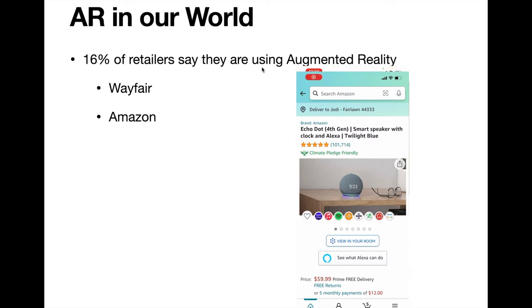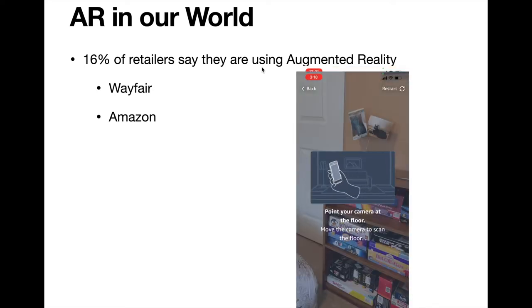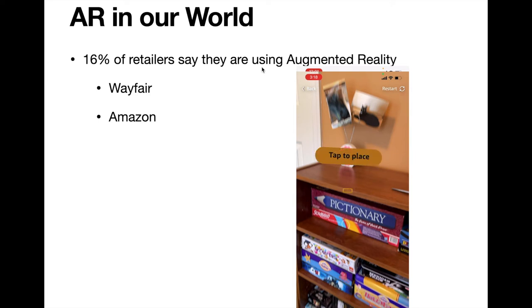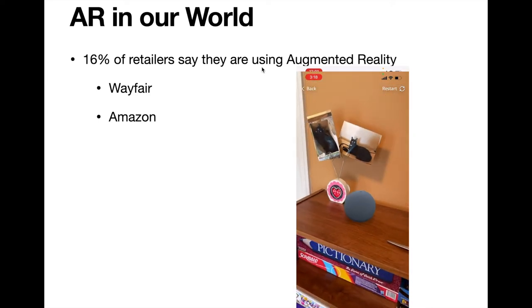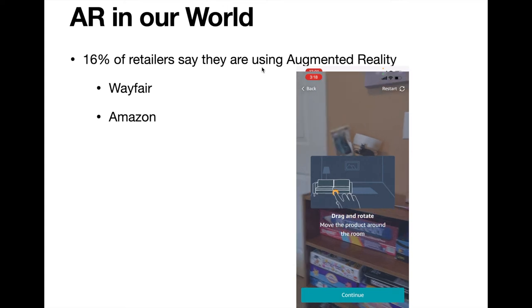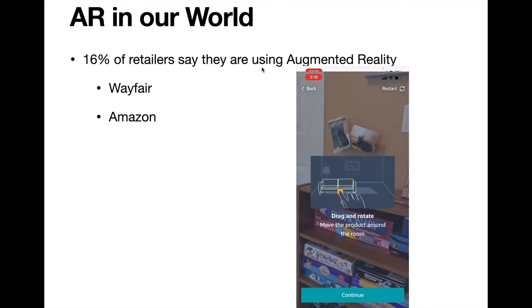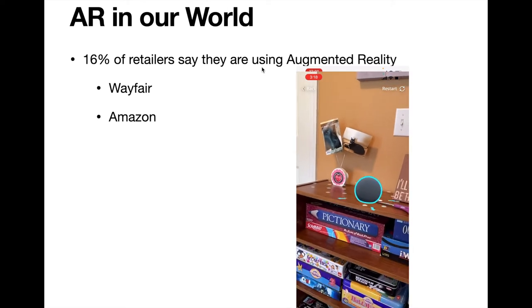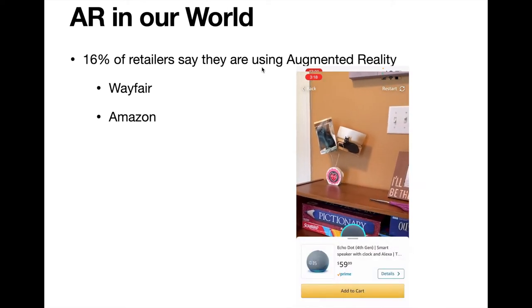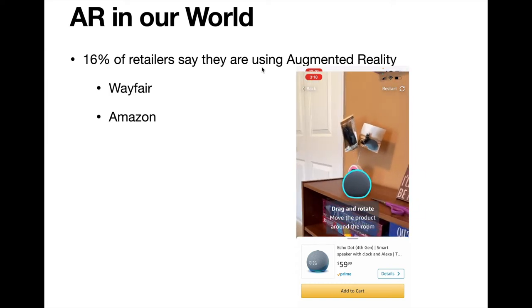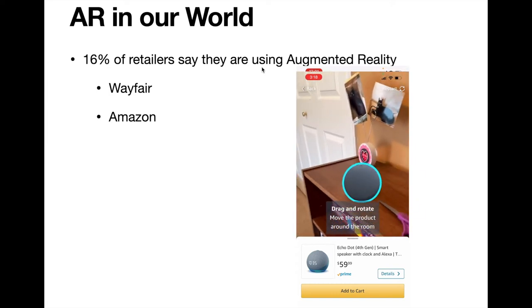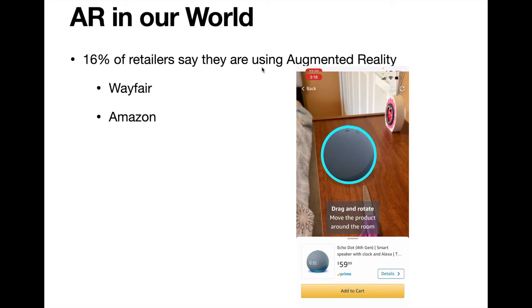Let's take a look at how that works in Amazon. Here's an Echo Dot — it's not even furniture or artwork, but Amazon knows this is an engaging piece of technology. I've placed it onto my bookshelf and now I can move it around, drag it, rotate it, walk up to it. And just like with Wayfair, if I like it, I can add it to my cart.